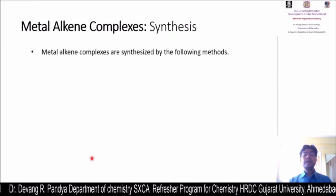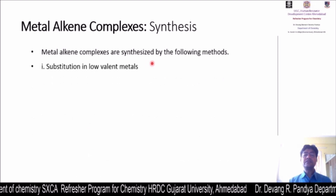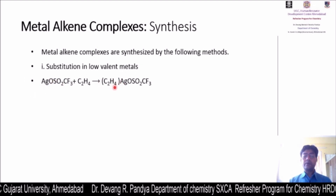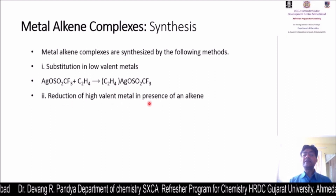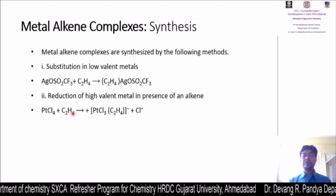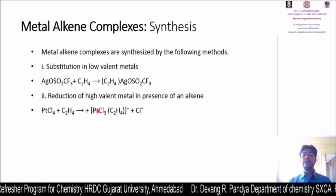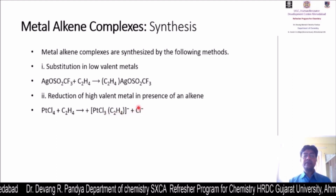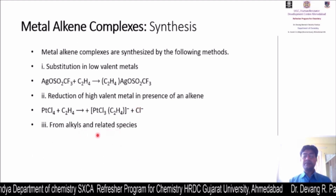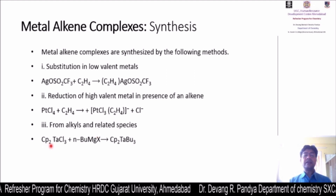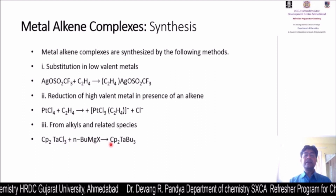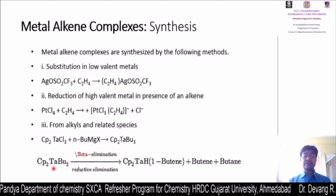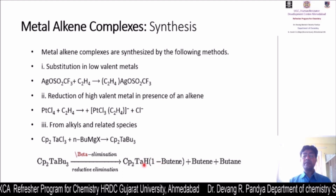Metal alkene complexes are synthesized by different methods. The first is substitution in low-valent metals, exemplified by silver giving a metal pi complex. The second is reduction of a high-valent metal in the presence of alkene - for example, platinum tetrachloride treated with ethene gives PtCl3(C2H4)⁻ where chlorine is substituted. From alkyls and related species, cyclopentadienyl tantalum trichloride treated with a Grignard reagent gives a methyl pi complex with butene via beta-elimination and reductive elimination.